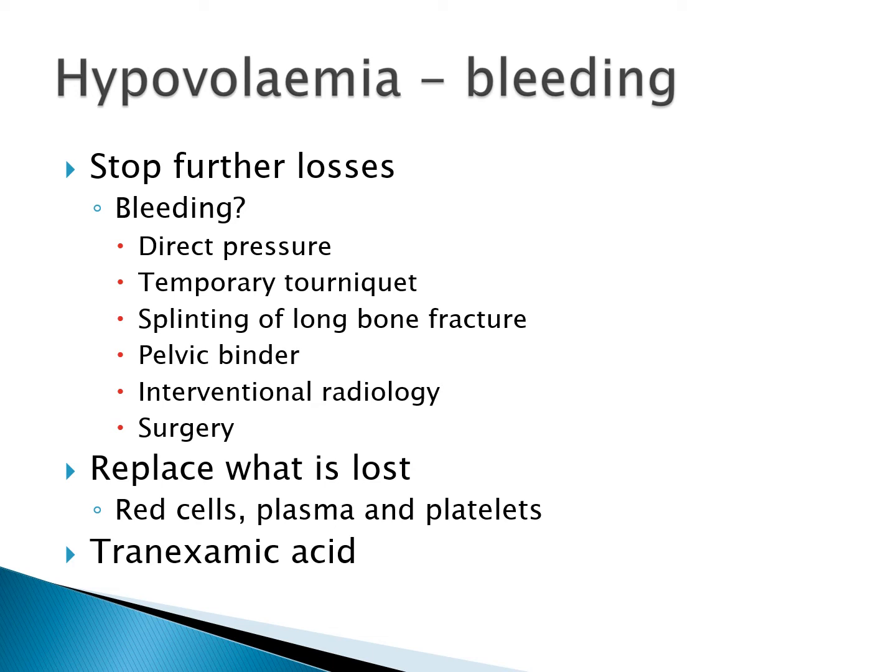Hypotension due to bleeding: the key is to turn the tap off — stop further losses. That may be down to you applying direct pressure to a wound, a temporary tourniquet, splinting of a long bone fracture, placing a pelvic binder in open book pelvic injury, or liaising with interventional radiology or surgery. We must also replace what's been lost — not just red cells but plasma including fibrinogen and platelets. In many cases of bleeding in intensive care, tranexamic acid can prove useful.